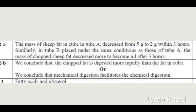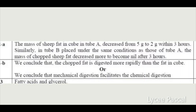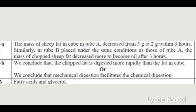The variable factor is the form of sheep fat: in tube A it is in cube form, while in tube B it is chopped. The results show a decrease in mass — in tube A, from 5 grams to 2 grams, while in tube B the mass disappeared entirely. So, the mass of cubed sheep fat in tube A decreased from 5 to 2 grams within 3 hours. Similarly, in tube B, placed under the same conditions, the mass of chopped sheep fat decreased more, becoming nil after 3 hours.